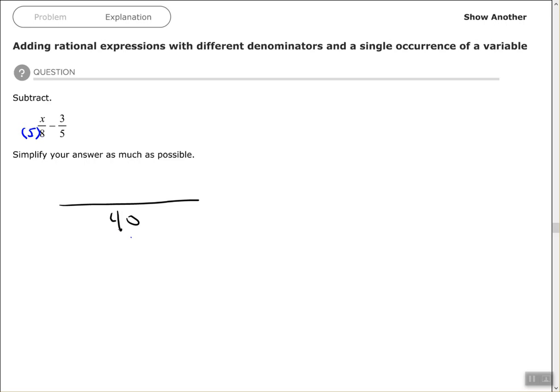Whatever I multiply my denominator by, I have to multiply the numerator by the same thing. So 5 times x gives me 5x. Minus - look at my second fraction, 5 times what number is 40? What did I multiply 5 by to get 40?